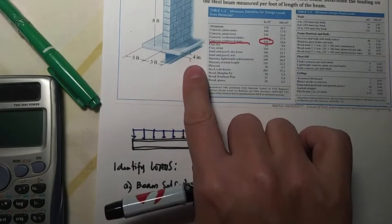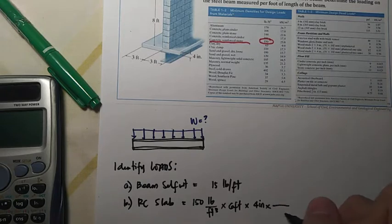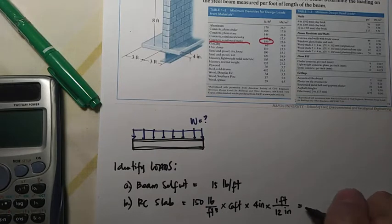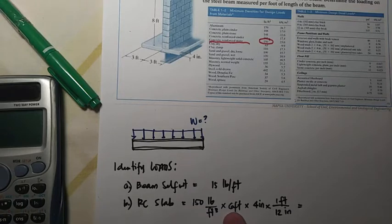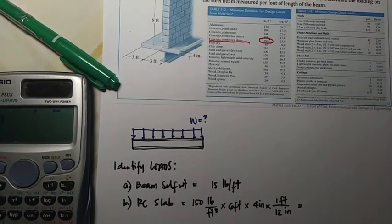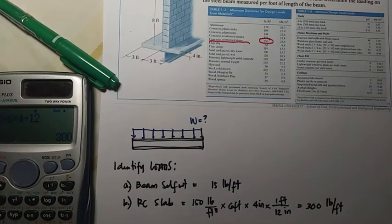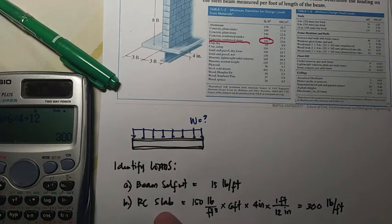So the width is 6 feet together with the thickness, and the thickness is 4 inches times 4 inches. But this is feet, convert the inches to feet. 1 foot is equivalent to 12 inches. So that is density times the width 6 feet and the thickness of this concrete slab 4 inches. So 150 times 6 times 4 divided by 12, so we got 300 pounds per foot.